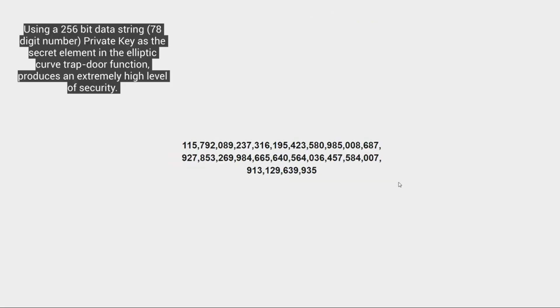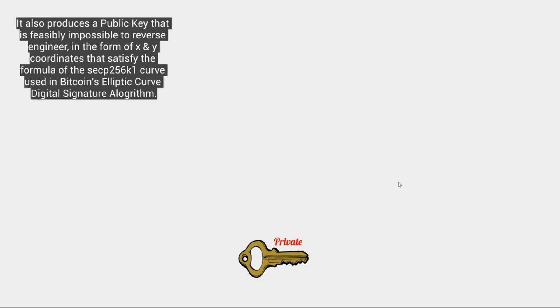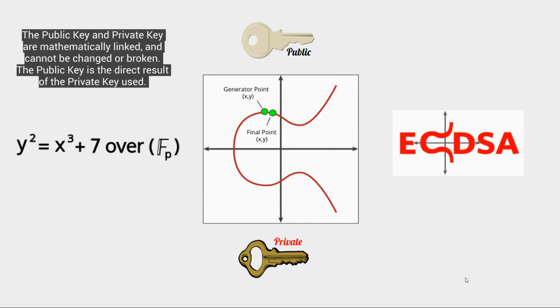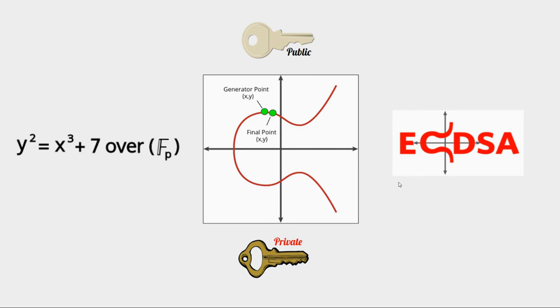So let's recap. Using a 256 bit private key as the secret element in an elliptic curve trapdoor function produces an extremely high level of security. It also produces a public key that is feasibly impossible to reverse engineer in the form of X and Y coordinates that satisfy the formula or parameters of the elliptic curve digital signature algorithm. The public key and private key are mathematically linked. The public key is the direct result of the private key used. If the private key changes for any reason, the public key will be different. This mathematical link remains constant forever and cannot be changed or broken. All of this comes together in a form of asymmetric cryptography that empowers the private key and public key cryptography behind Bitcoin's decentralized blockchain.